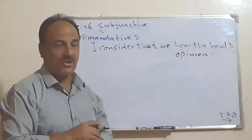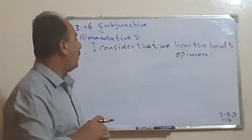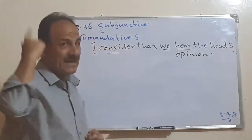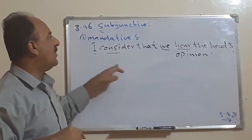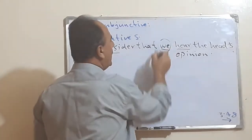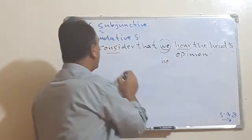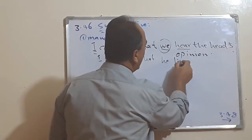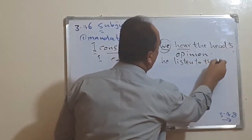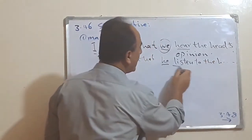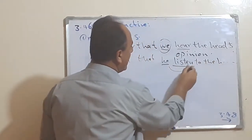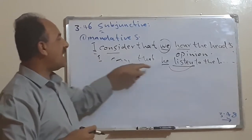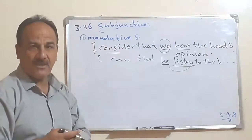We say there should be a deviation. The deviation in this sentence is not clear because there is concord between 'I' and 'consider', and 'we' and 'hear'. But if we change 'we' to 'he', we say: 'I consider that he listen to the head's opinion.' We have 'listen' and 'he' — that's what we mean by mandative. Because it's supposed to be: 'I consider that he listens to the head's opinion.'